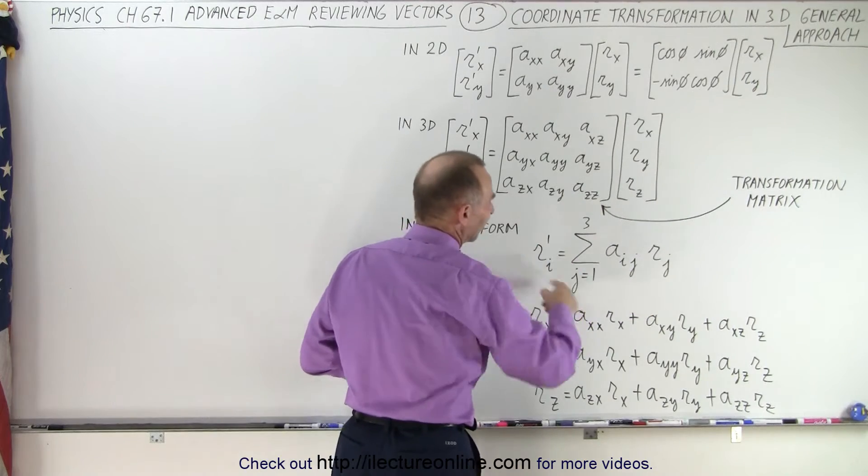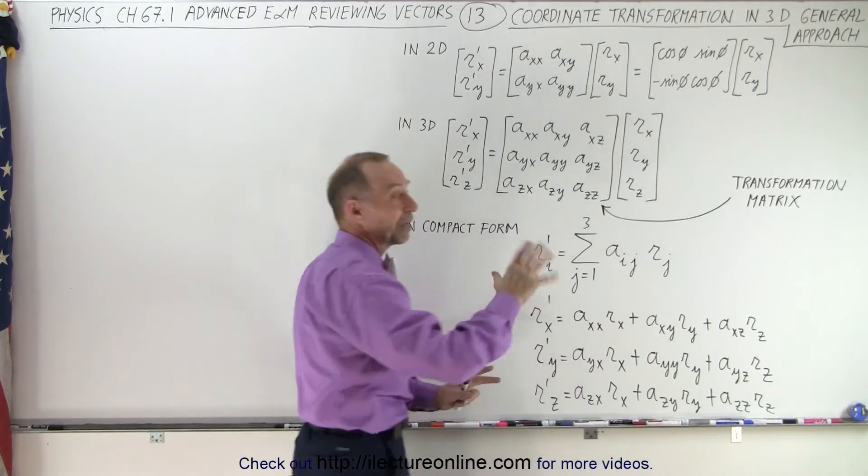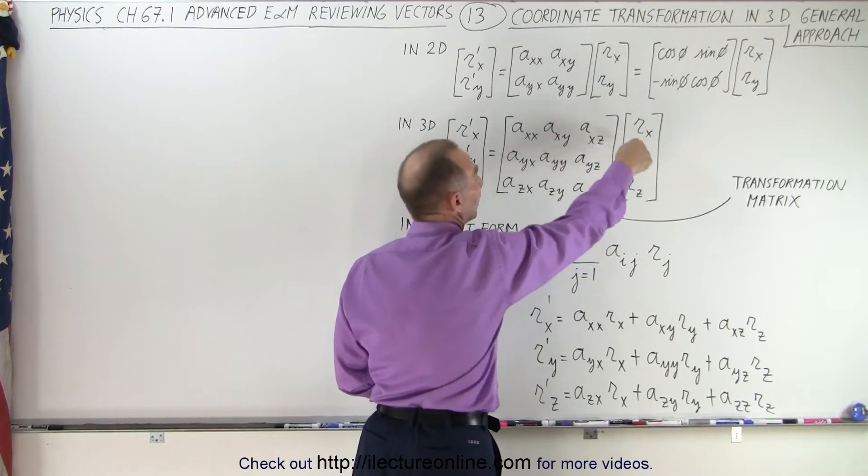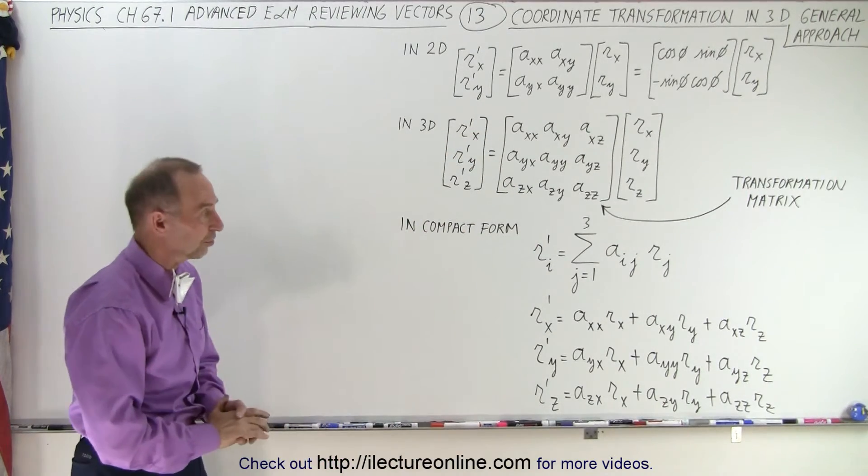So sometimes when you see this in a book, you can say, 'Oh wow, what does that mean?' It literally means this: a transformation matrix multiplied times the original vector in the xyz coordinate system to give you the xyz components in the new coordinate system.